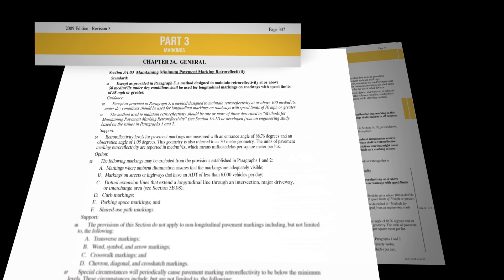If you haven't already read this section, it can be found at the link in the video description. It is suggested you read that before continuing with this video. The continued use of a method designed to maintain pavement markings at or above the specific minimum retroreflectivity levels is the key factor indicating compliance with this section of the MUTCD.